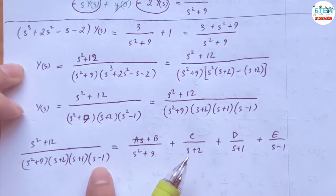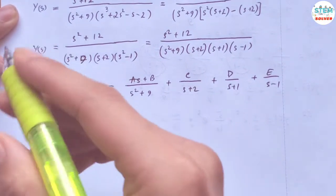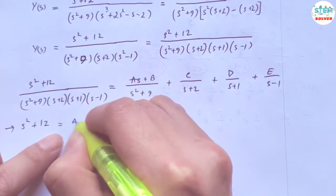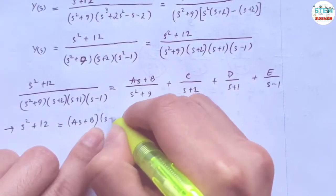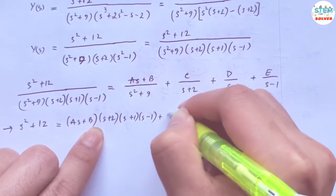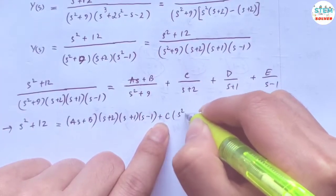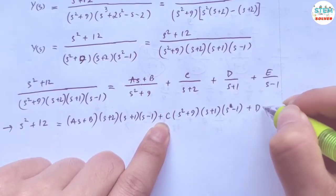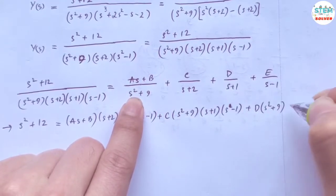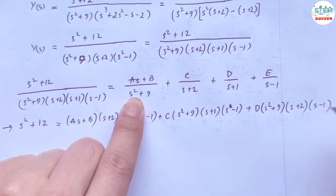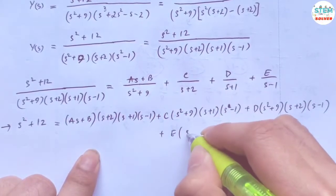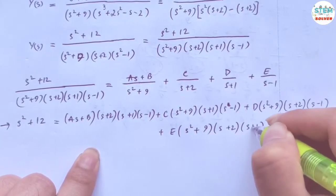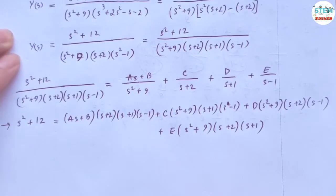The LCD is everything in the denominator. Multiplying both sides by the LCD gives: 3s squared plus 12 equals (As + B)(s + 2)(s + 1)(s minus 1), plus C(s squared + 9)(s + 1)(s minus 1), plus D(s squared + 9)(s + 2)(s minus 1), plus E(s squared + 9)(s + 2)(s + 1).